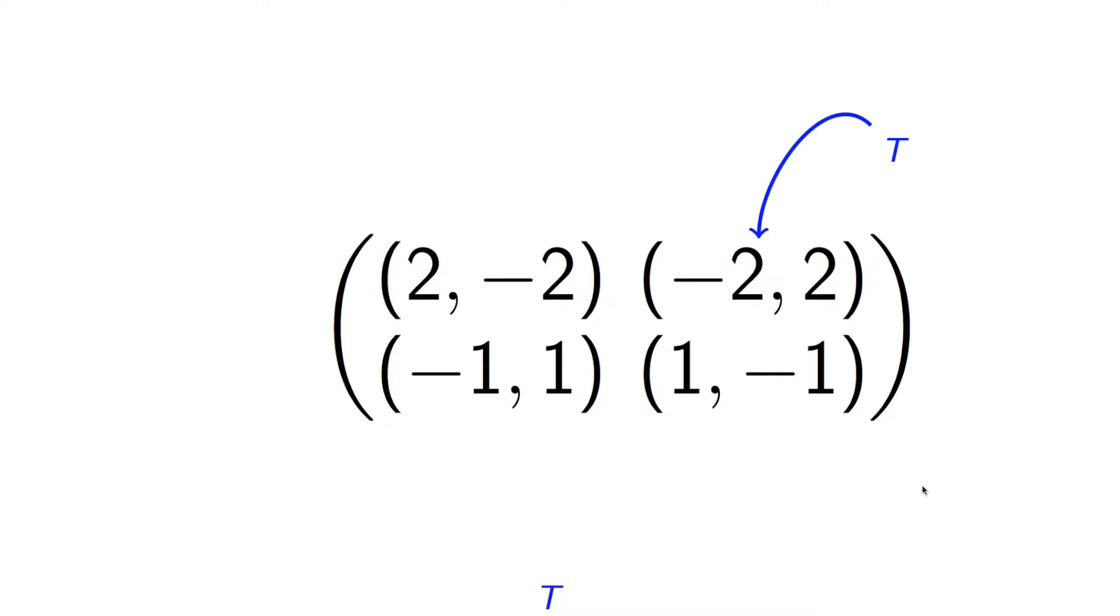If the column player plays tails, the row player should respond by playing tails. If the row player is playing tails, the column player should play heads. If the column player is playing heads, the row player should play heads. If the row player is playing heads, then the column player should move back to tails. The best response to that is for the row player to play tails, and we are in a cycle that is dynamic. There's no equilibrium here.